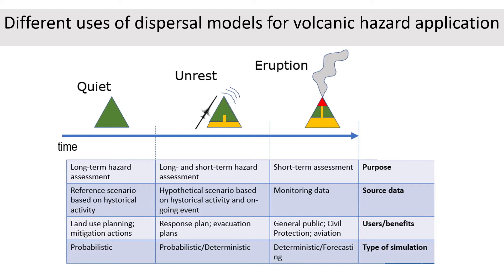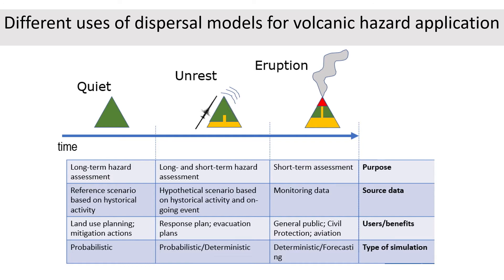In the quiet phase, we would use information about what happened before at the volcano — its historical activity — and design scenarios based on that, obtaining probabilistic hazard results that could be used for land use planning. When a volcano starts to show unrest, we might update such scenarios and start providing the dispersal model with more accurate information related to the ongoing event, using forecasting data to provide anticipation of what might happen if an eruption starts.